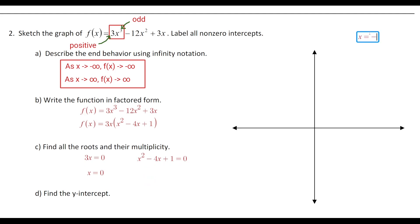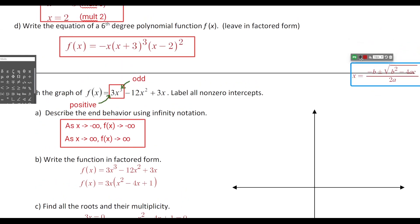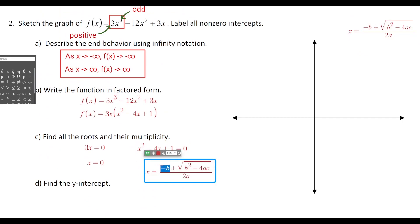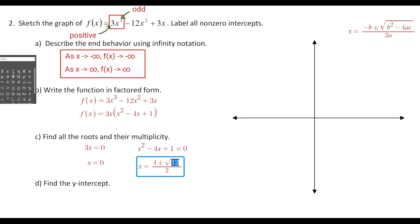The quadratic formula is x = (−b ± √(b² − 4ac)) / 2a. Plugging in a = 1, b = −4, c = 1: we get (4 ± √(16 − 4)) / 2 = (4 ± √12) / 2. So our three roots are x = 0, x = (4 − √12)/2, and x = (4 + √12)/2.